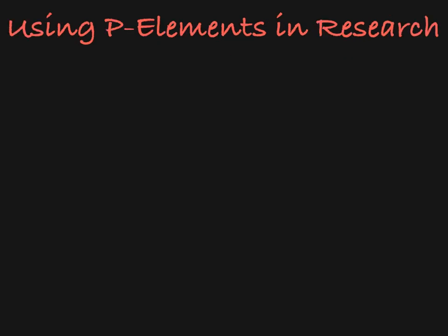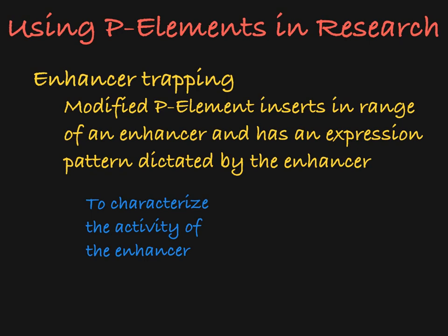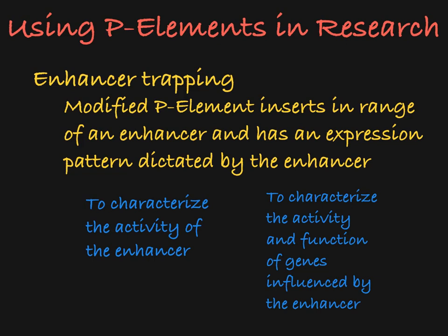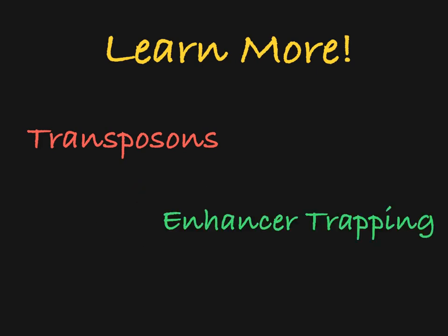You may be wondering what use P elements can be for a scientist in a lab. One use of P elements would be in enhancer trapping. A modified P element that inserts near an enhancer in a fly's genome can then be used to identify and study the activity of that enhancer and therefore the activity of the genes generally associated with it. Those are the basics of P elements. If you want to review the basics of transposons, you can check out my video on transposons. You may also be interested in my video on enhancer trapping.